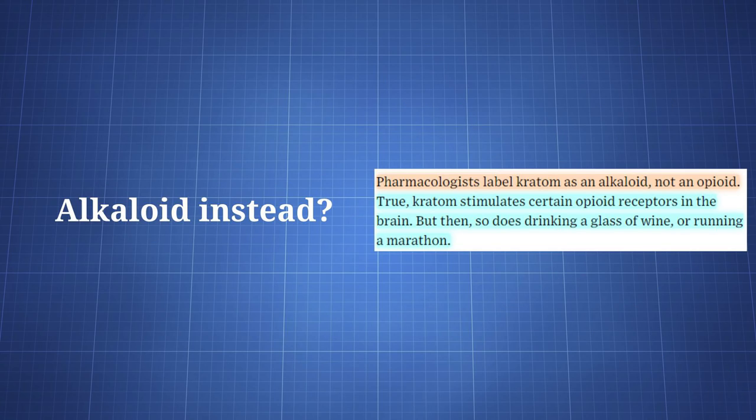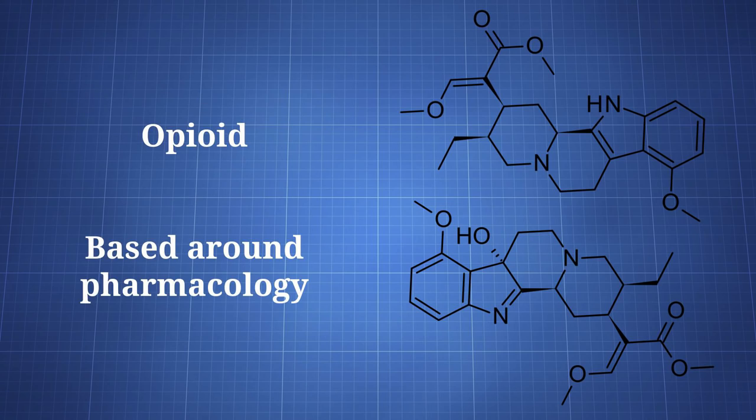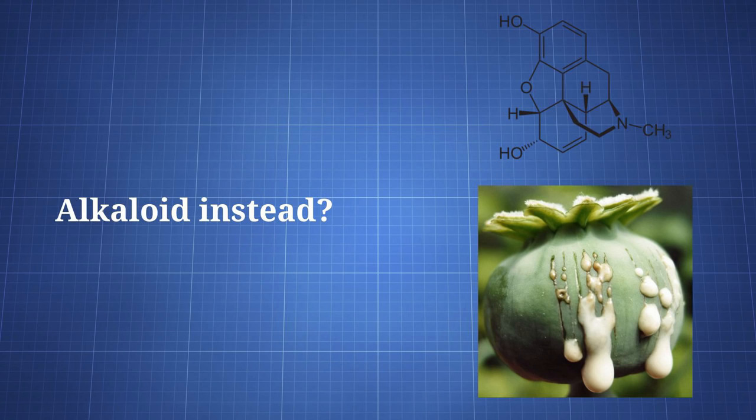Going back to the Wired piece, and this has actually appeared elsewhere, the claim is that Kratom is not an opioid, but instead contains alkaloids. Wired even states, pharmacologists label Kratom as an alkaloid, not an opioid. Anyone with a slight understanding of this would see the problems with that statement. First, the sentence does not even make sense. Alkaloid deals largely with chemical structure, and is generally used when discussing nitrogen-containing alkaline substances. Opioid is a pharmacological term, rather than an organic chemistry term. That brings me to point number two, which is that morphine, one of the most important opioids in history, is an alkaloid.